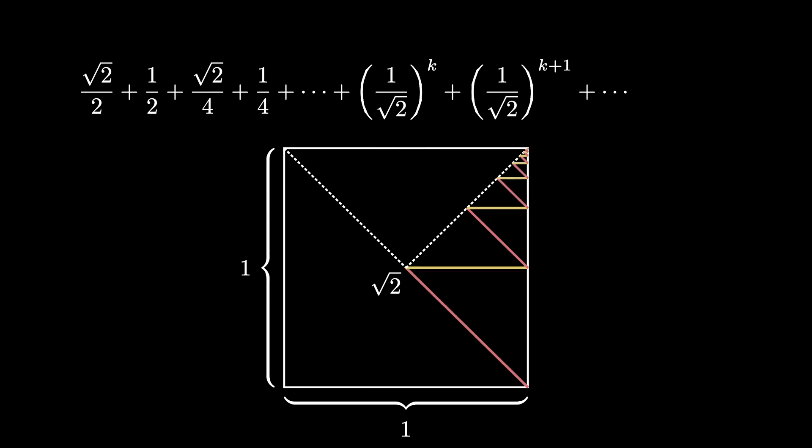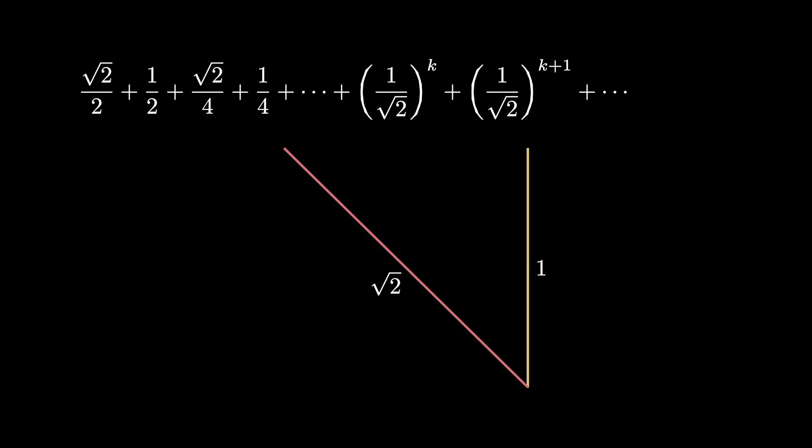But now we perform our trick. We rotate the horizontal line segments 90 degrees about their end point, filling in the right side of the square. And then we shift the diagonal line segments over to the main diagonal of the square, filling that entirely as well. And this means that the sum of the lengths of the zigzag diagram must be equal to the sum of the side length of the square plus the diagonal of the square.